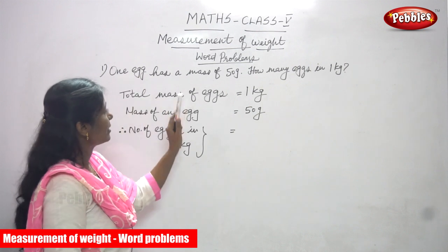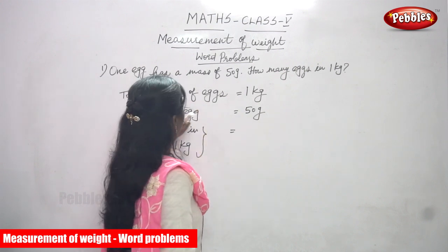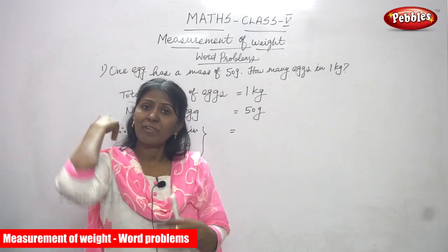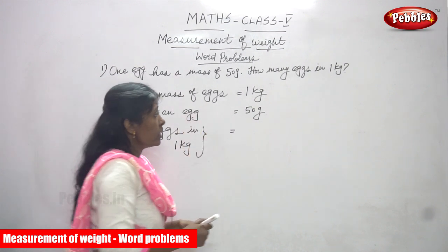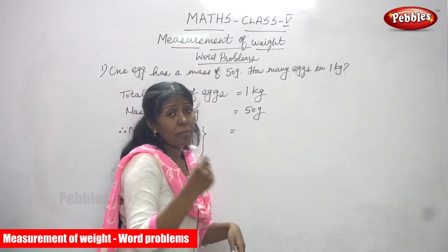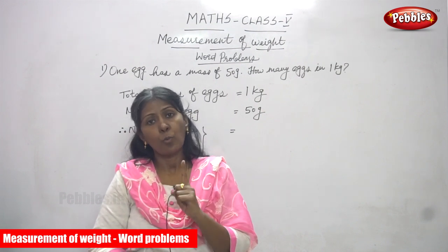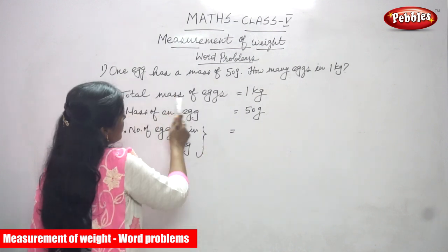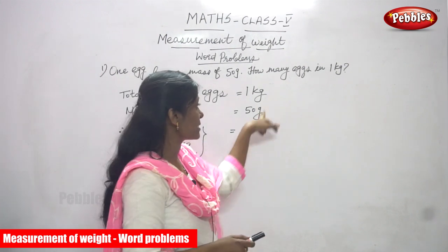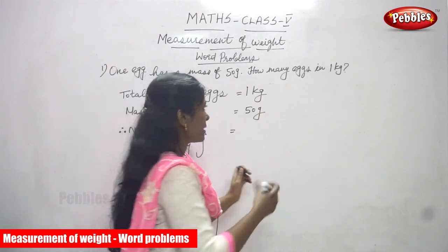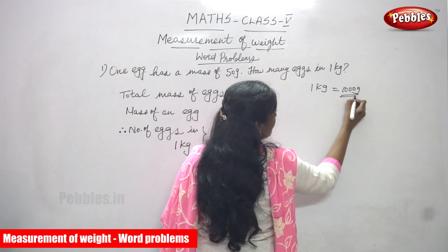So the total mass of eggs is equal to one kilogram. The total weight of eggs equals 1 kilogram. The mass of each egg is equal to 50 grams. But there is a different unit — first you have to convert into the same unit. So 1 kilogram is equal to 1000 grams. You have to convert into grams first.